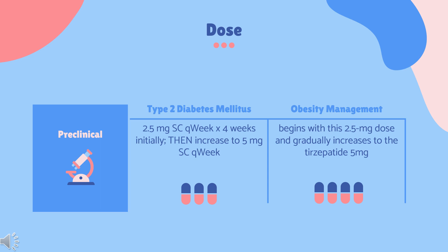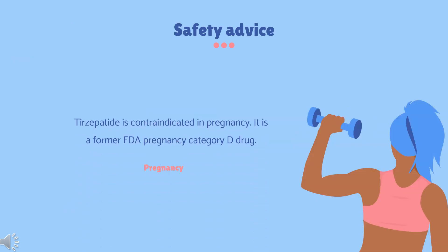For weight loss, the tirzepatide dosing schedule typically begins with the 2.5 mg dose and gradually increases to the 5 mg dosage and potentially higher, depending on the individual's response and tolerance. This personalized dosing regimen ensures maximum dose efficiency while minimizing side effects. Safety Advice: Pregnancy Category D — drugs which have caused, are suspected to have caused, or may be expected to cause an increased incidence of human fetal malformations or irreversible damage.